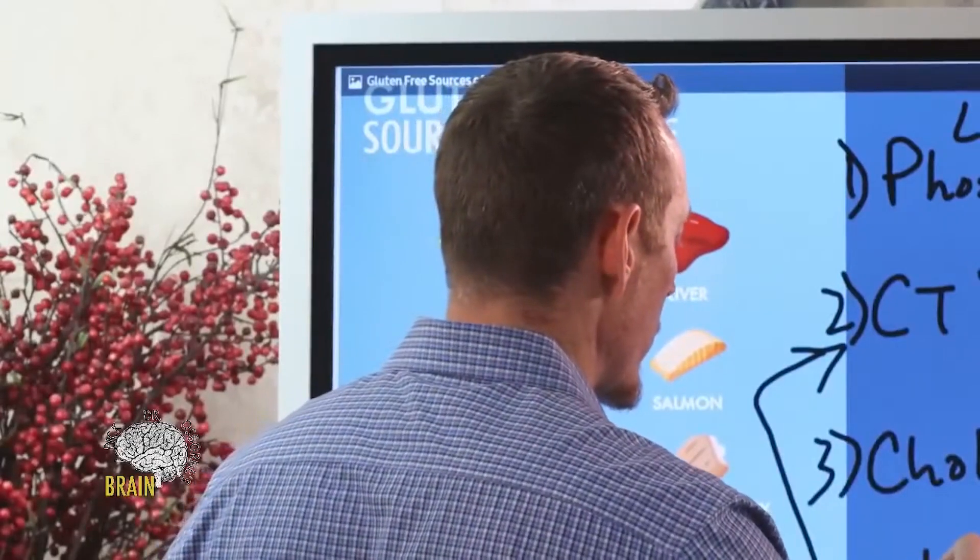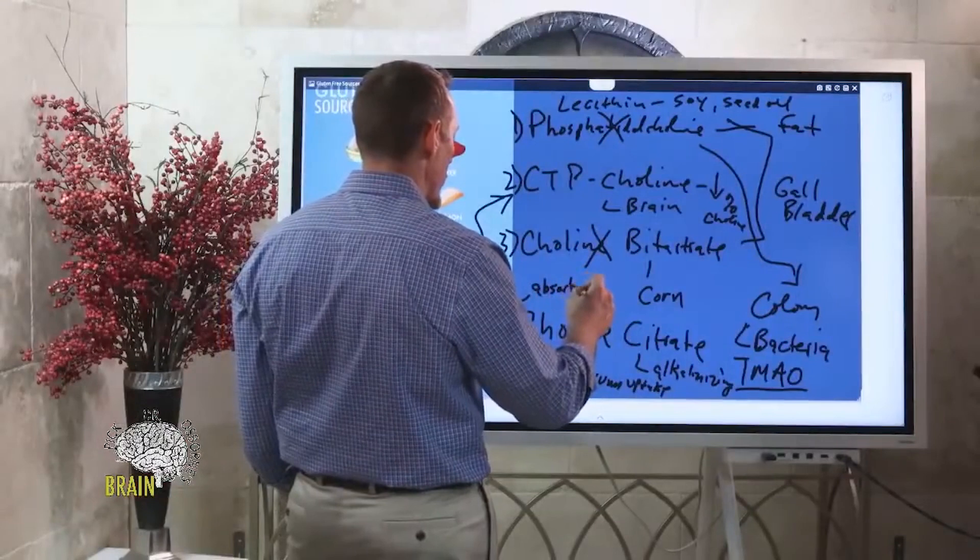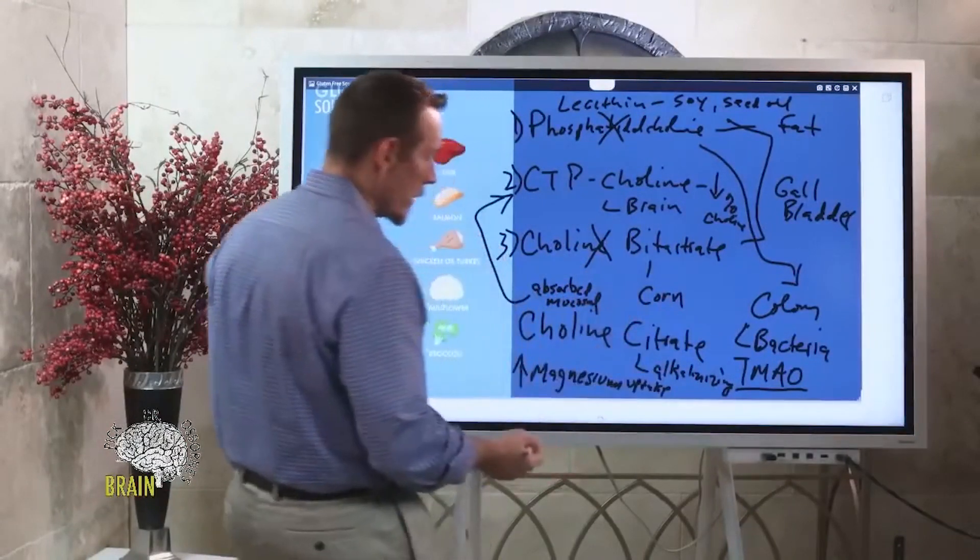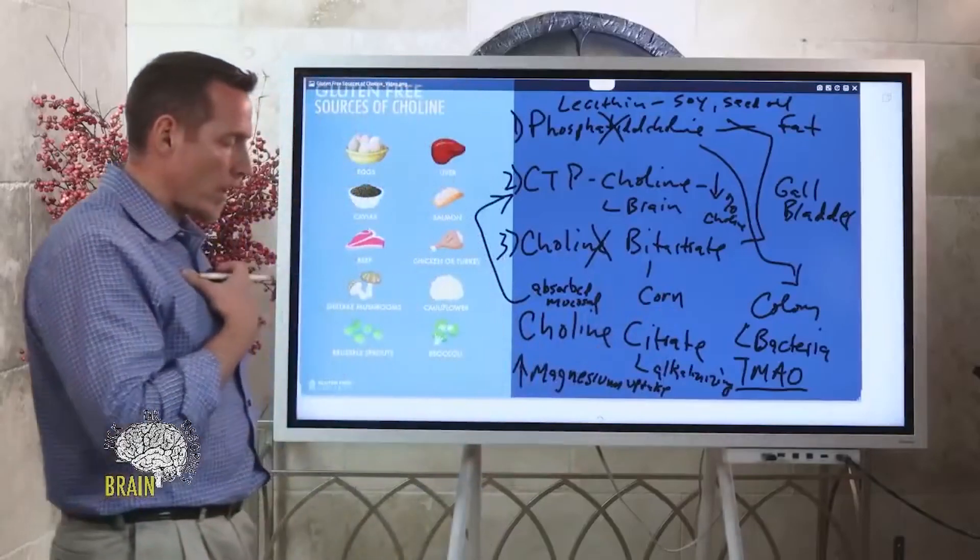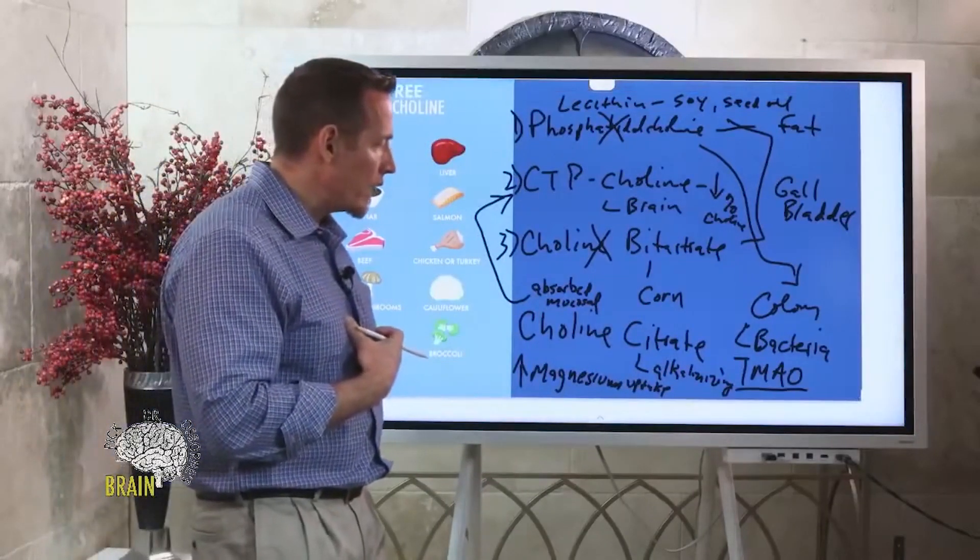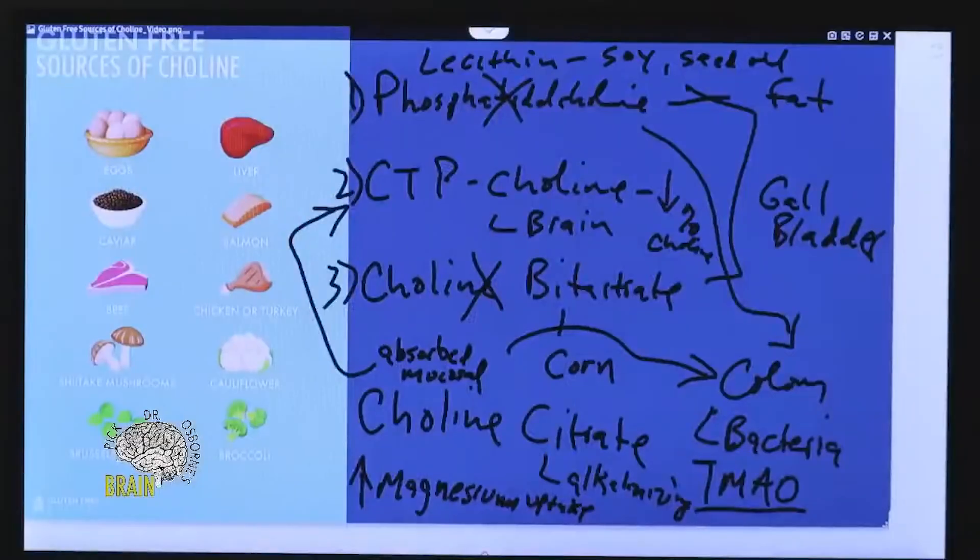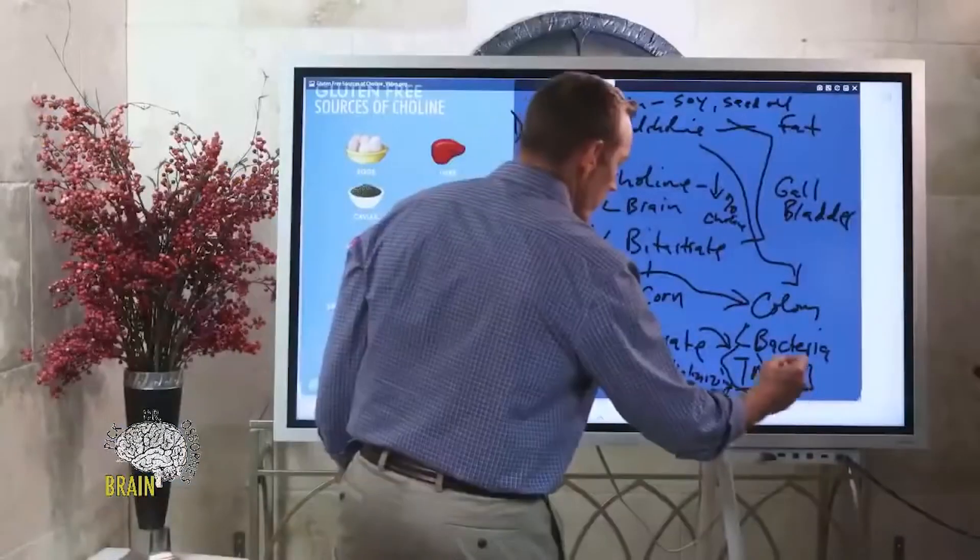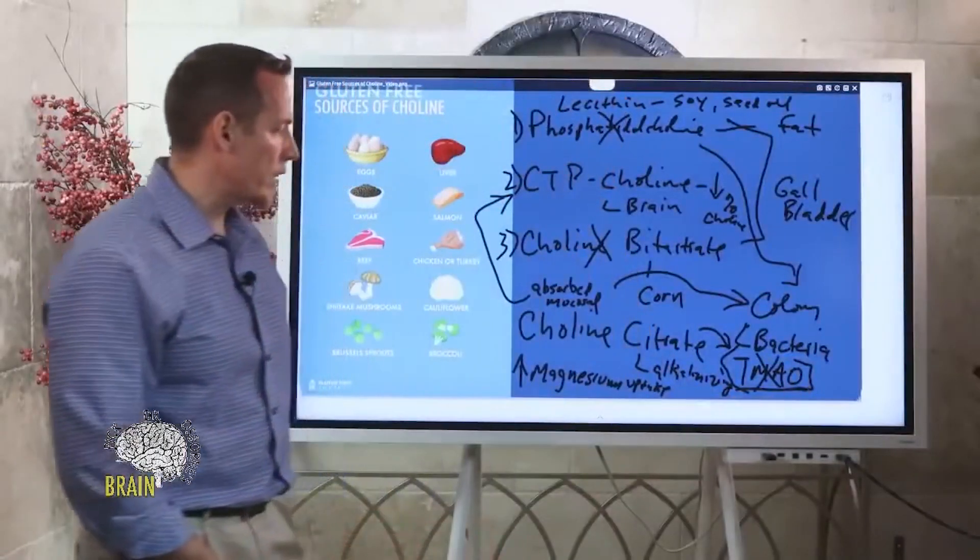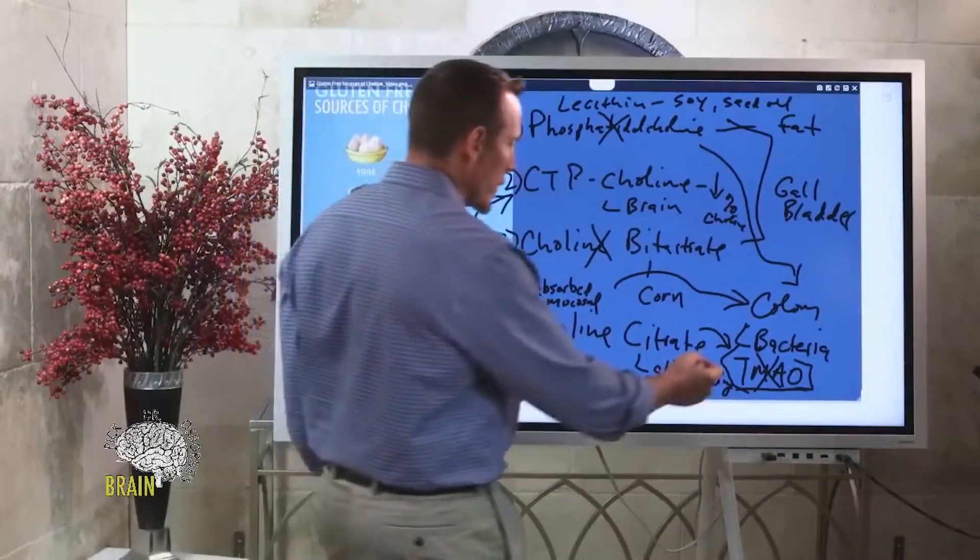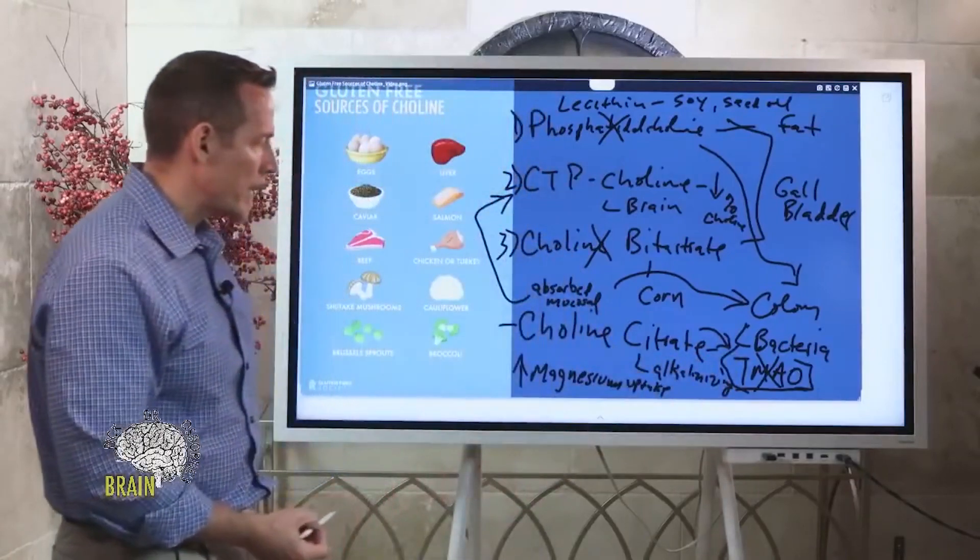The other reason why I like choline citrate is it's obviously grain-free, but it's absorbed through mucosal linings. This can be absorbed through the mucosal lining in your stomach and in your upper small intestine, so it never really makes it down to the colon where those bacteria can convert it into TMAO. When you take choline citrate in high doses, you don't really have to worry about that chemical right there. You don't have to worry about that increased potential. This, in my opinion, is why choline citrate, if you're going to use supplementation, is a superior type of choline.